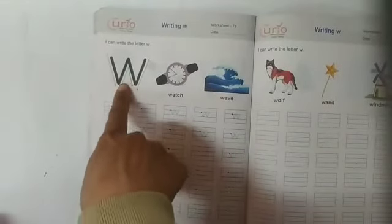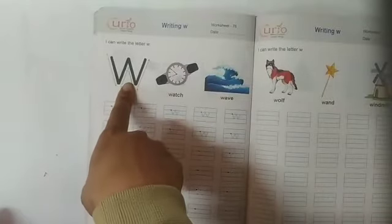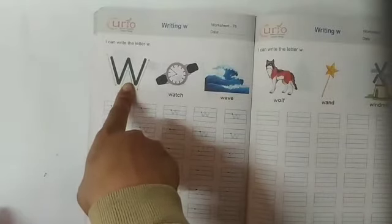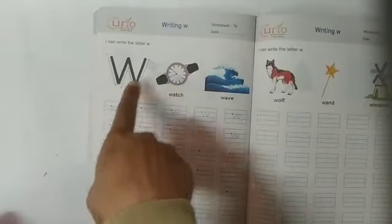This is W. This is small w. And the sound of W is wah. W says wah. Wah. Watch. Wah. Wave.